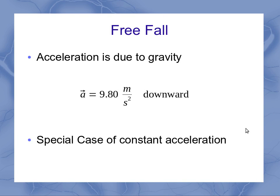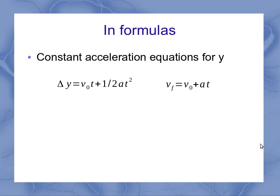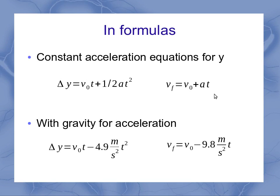This is a special case of constant acceleration because it always has that value of 9.8 meters per second squared downward. If we look at it in formulas, our constant acceleration for the y direction can be written out in this form. Plugging in our acceleration gives us these forms of the equations, but the initial velocity and the time are still in there to find your vertical displacement or your vertical final velocity as you're moving through time.